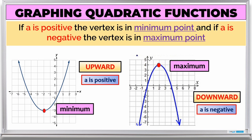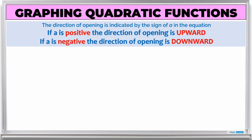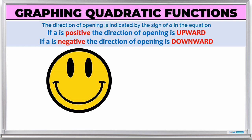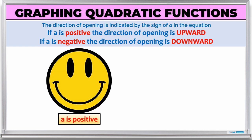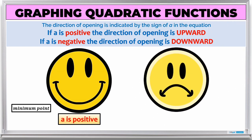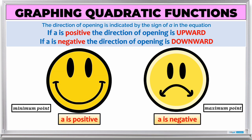Again, when the parabola opens upward, the vertex is at the minimum point. When it opens downward, the vertex is at the maximum point. If a is positive, the graph opens upward — like a smiley face. If a is negative, the graph opens downward — like a frown face — and the vertex is at the maximum point.